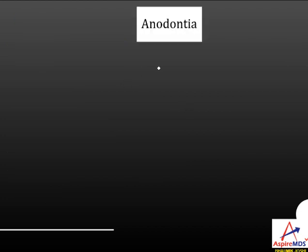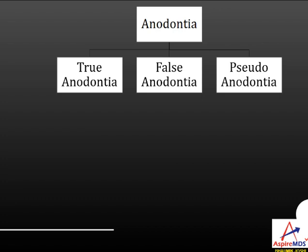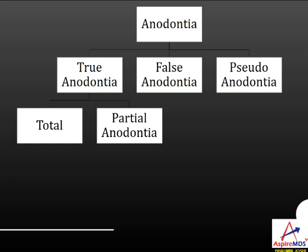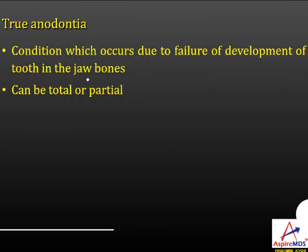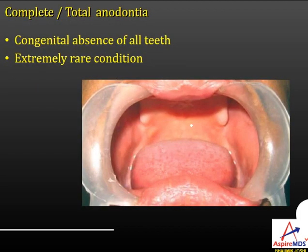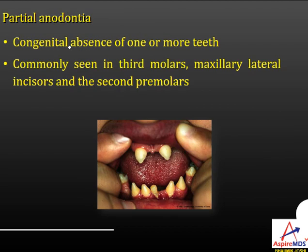Anodontia can be true anodontia, false anodontia, or pseudo anodontia. True anodontia occurs due to failure of development of teeth in the jaw bones. Total anodontia is congenital absence of all teeth — a rare condition. Partial anodontia is congenital absence of one or more teeth; the most commonly affected are third molars, then lateral incisors, then second premolars. If more than one but fewer than six teeth are missing, it is called hypodontia.